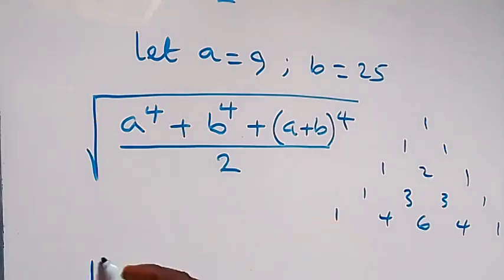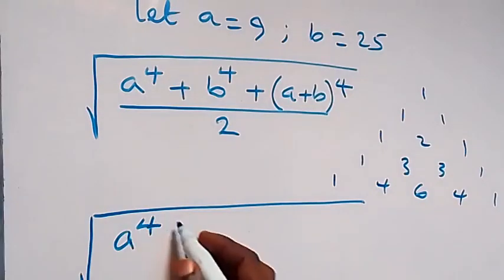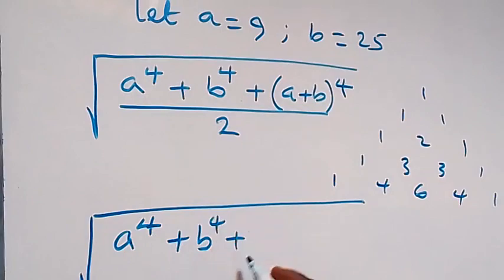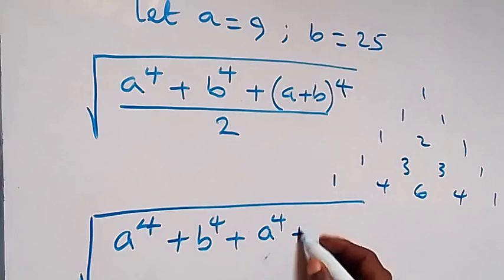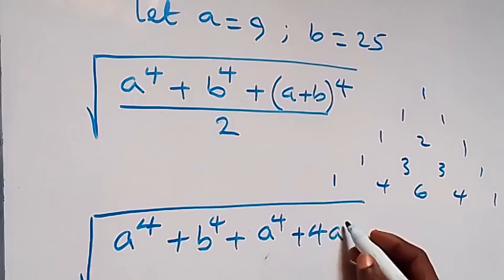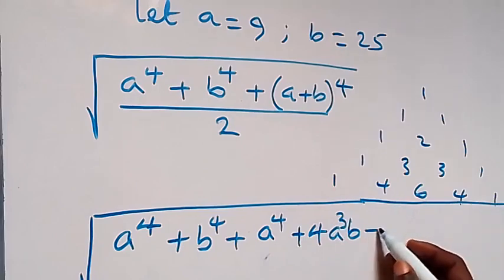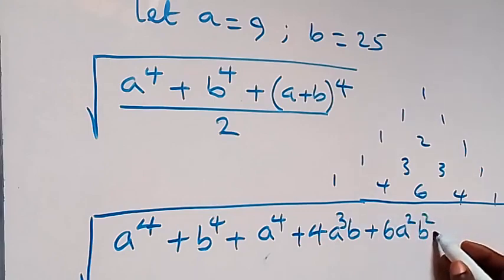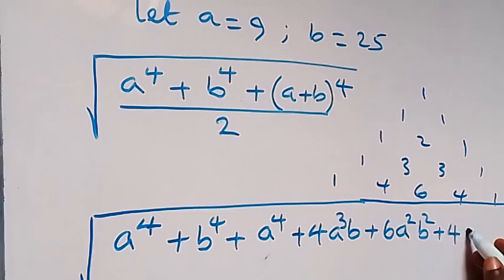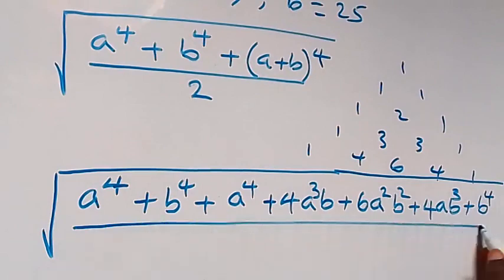Here we are going to have square root of a raised to the power of 4, plus b raised to the power of 4, then plus: the first term is a raised to the power of 4 with a coefficient of 1, then plus 4 as a coefficient times a raised to the power of 3 times b raised to the power of 1, then plus 6 times a squared b squared, then plus 4 times a times b raised to the power of 3, then plus b raised to the power of 4, all over 2.